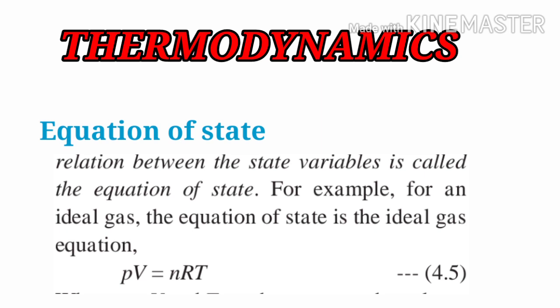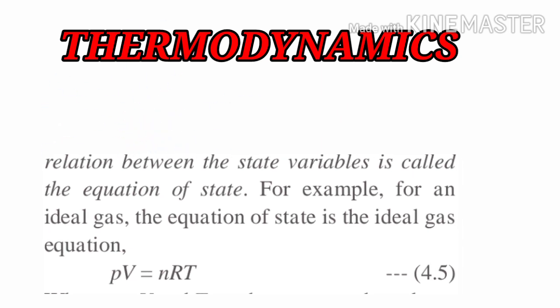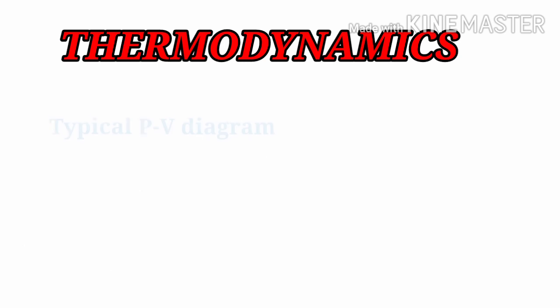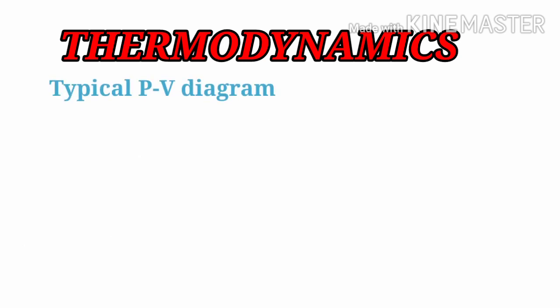In the ideal gas equation PV = nRT, P is the pressure, V is the volume, n is the number of moles, R is the gas constant, and T is the temperature. Now we are going to learn how to represent the typical PV diagram — the graph between pressure and volume — and how to read it.